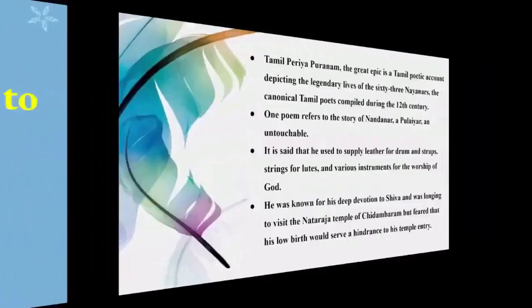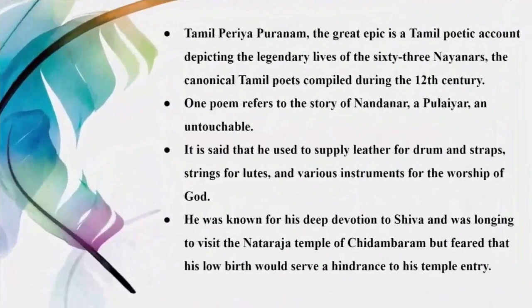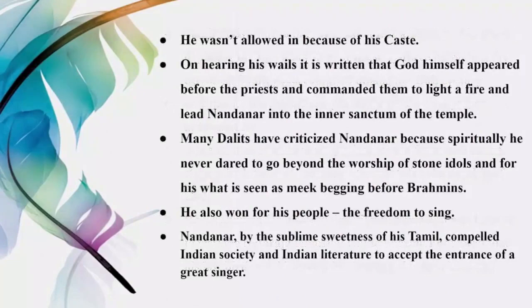Background to Nandan. The Tamil Periya Puranam, the great epic, is a Tamil poetic account depicting the legendary lives of the 63 Nayanmars, the canonical Tamil poets compiled during the 12th century. One poem refers to the story of Nandanar, a Pulayar and untouchable. It is said that he used to supply leather for drums and straps, strings for lutes and various instruments for the worship of God. He was known for his deep devotion to Shiva and was longing to visit the Nataraja temple of Chidambaram, but feared that his low birth would serve as a hindrance to his temple entry.